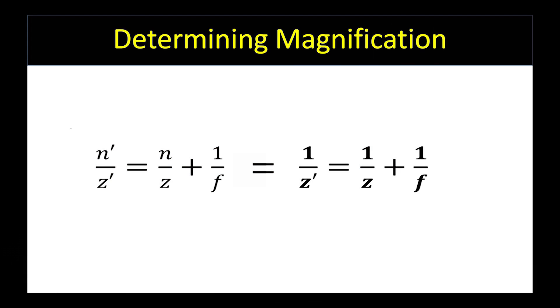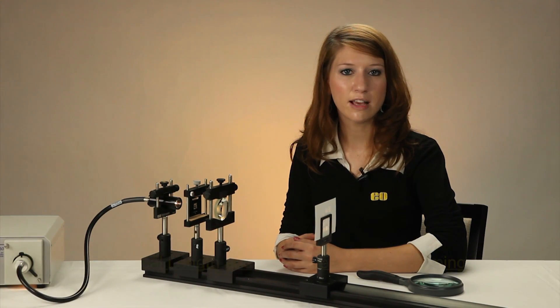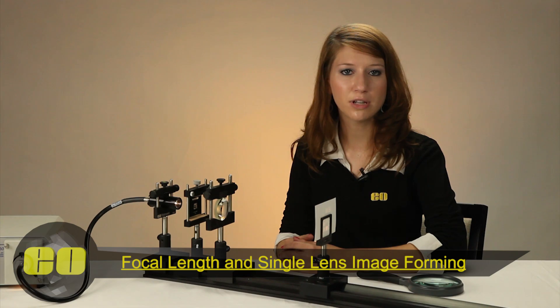With this system, we know we can apply the imaging equation shown here. We recall that n prime and n both equal one since we are in air, and where we know z is negative according to our sign convention since we measure it from right to left. For further detail on the imaging equation, please watch the video linked in the text below.